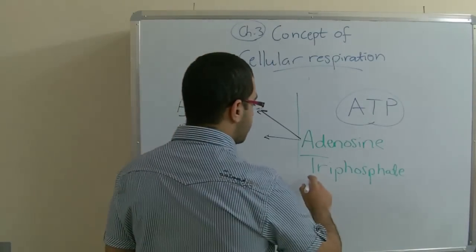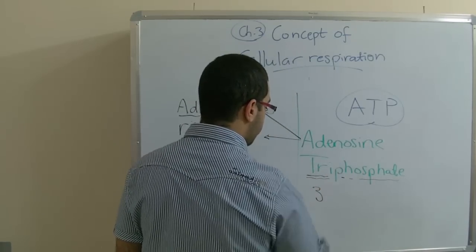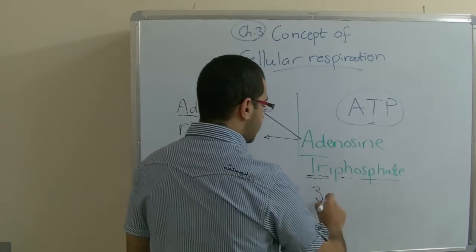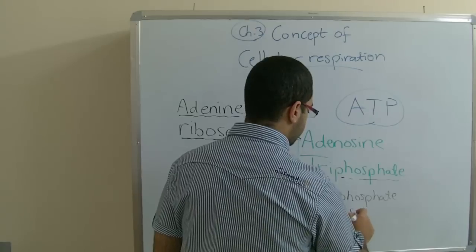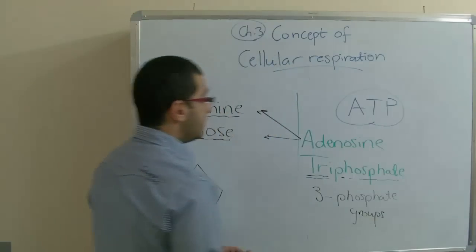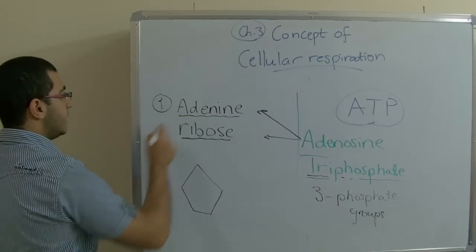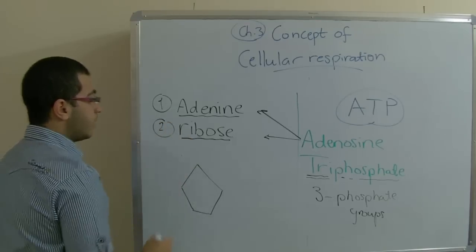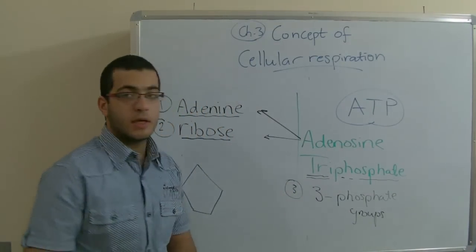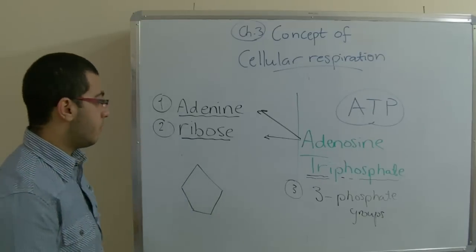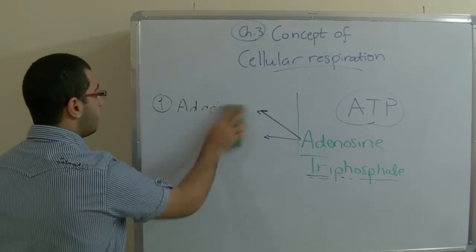And triphosphate. Here we have tri means that there are three and phosphate is phosphate groups. So adenosine triphosphate contains the nitrogen base, adenine, ribose sugar and three phosphate groups binded together with high energy bonds.